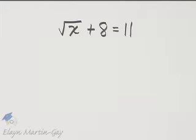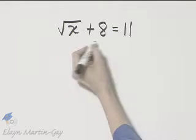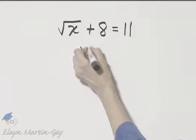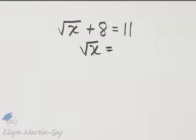So remember what we want to do? If possible, isolate the radical. And it is possible in this case. Here we'll have square root of x is equal to 11 minus 8. And what is 11 minus 8? That is 3.